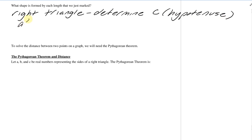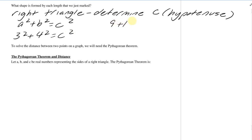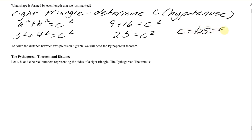So I take a² + b² = c² and fill in those legs. This becomes 3² + 4² = c². Working this out: 9 + 16 = c², so 25 = c². Taking the square root, c = √25 = 5. So that would actually be the length of that diagonal distance.